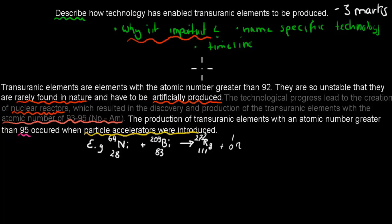And the examples that we gave were anything with the atomic number greater than 95. So here we've done everything. We've said why is important, because we have to create anything which is higher than 92, because they don't occur naturally. We gave specific examples in terms of technology, such as the nuclear reactors and the particle accelerators. We also gave a timeline by saying that first the nuclear reactors came around, nuclear reactors were first, and then the particle accelerators were introduced later. And that enabled us to discover even more elements.